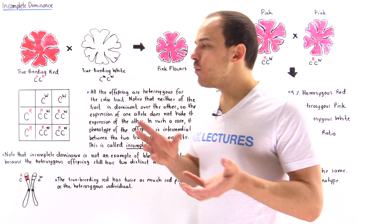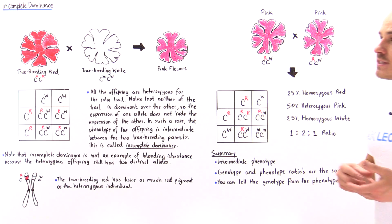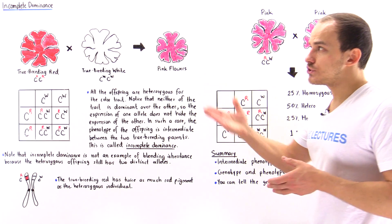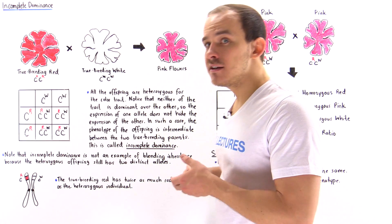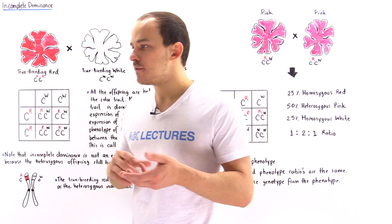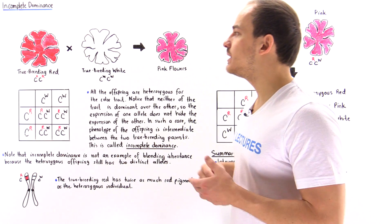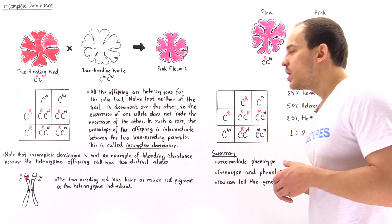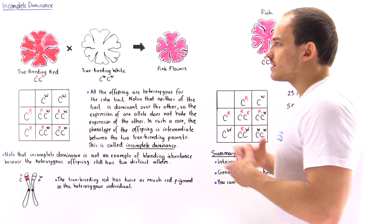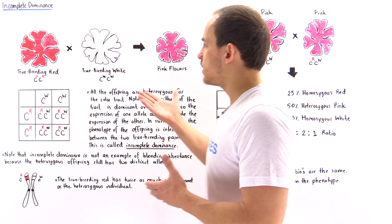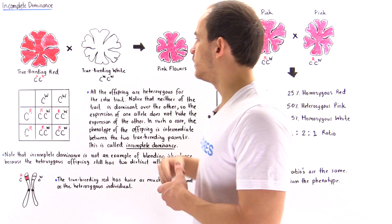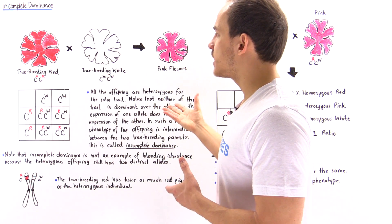Now we're going to focus on a different type of mode of inheritance known as incomplete dominance, which is different than complete dominance. To demonstrate what incomplete dominance is, let's suppose we have the following two parental phenotypes.